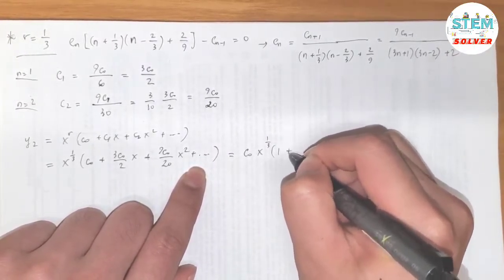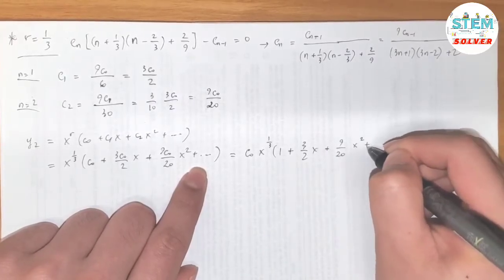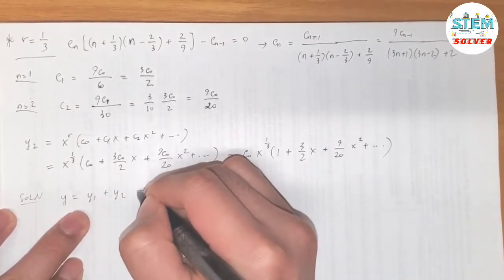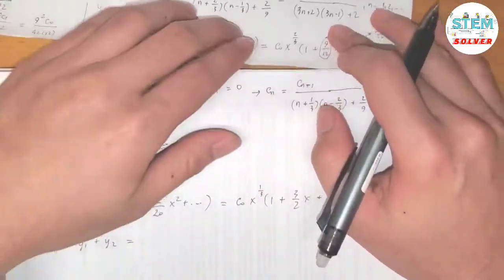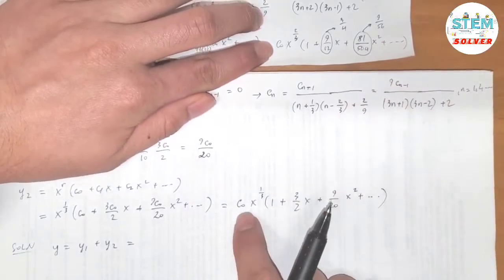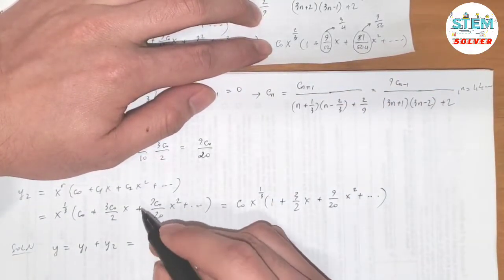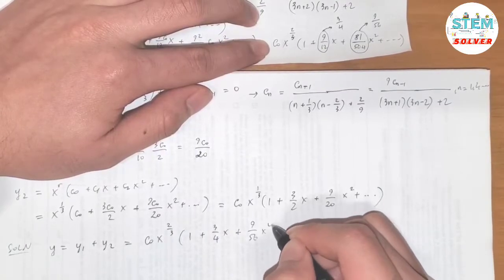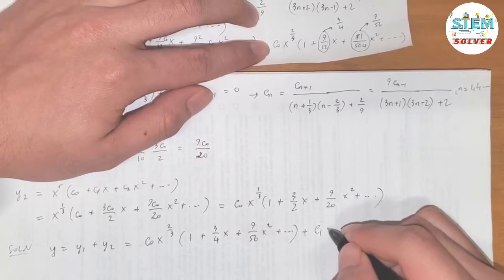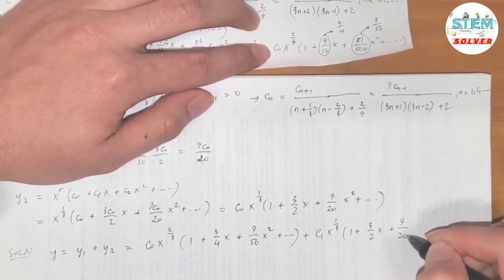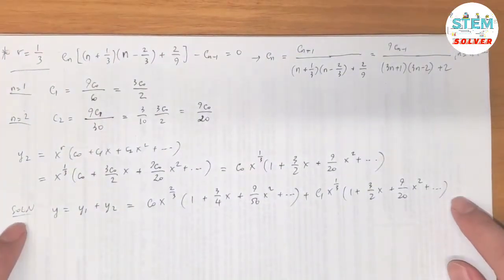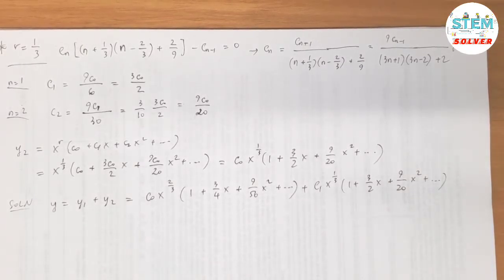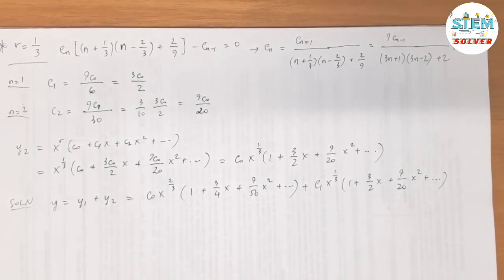The final solution is y equals y_1 plus y_2, where the two c_0 constants are independent. So y equals c_0 x to the 2/3 times (1 plus 3/4 x plus 9/56 x squared plus dot dot dot) plus c_0 x to the 1/3 times (1 plus 3/2 x plus 9/20 x squared plus dot dot dot). That's the complete solution. If you find the video helpful, feel free to like, share, and subscribe to receive the most current videos, and hit the bell so you won't miss anything.